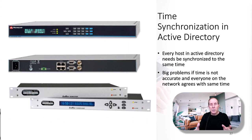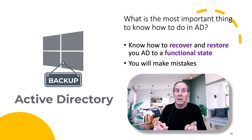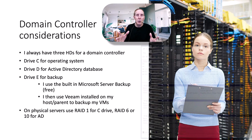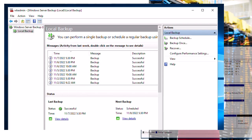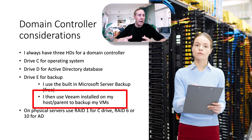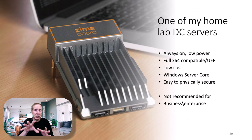The most important thing you need to know how to do in Active Directory is recover and restore your AD to a functional state, because you will make mistakes. I usually build my domain controllers with three hard drives: a C drive for the operating system, a D drive for the Active Directory database, and an E drive for backup. I use Microsoft Server Backup — it's free and built into Windows. I also use Veeam installed on my host to backup my VMs. On a physical server, use RAID 1 for the C drive and RAID 6 or RAID 10 for AD.